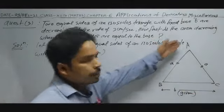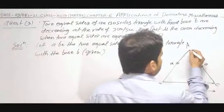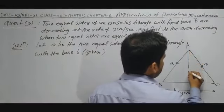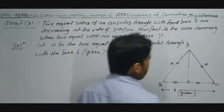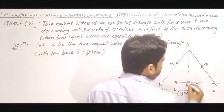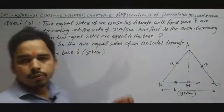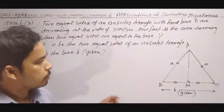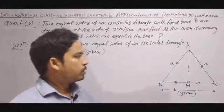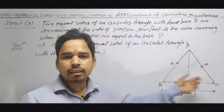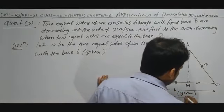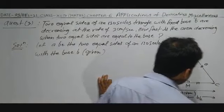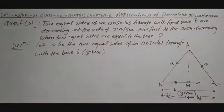If we draw the perpendicular from the vertex to the base, the base is divided equally. Suppose AM is the length of perpendicular drawn from A to BC. By the property of an isosceles triangle, the perpendicular bisects the base, so each half equals B/2.